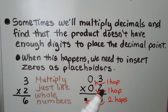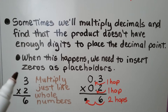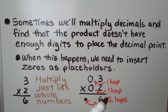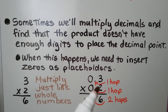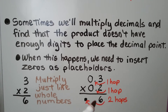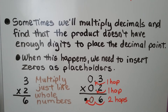We have 3 tenths times 2 tenths. We multiply just like whole numbers — 3 times 2 is 6, so we know there's going to be a 6. We count the number of place values, the hops. We have 1, 2 in the factors, so we know there's going to be 2 in the product. When we hop 1, 2, we have an empty place value. We can put a zero there as a placeholder. We have 6 hundredths.